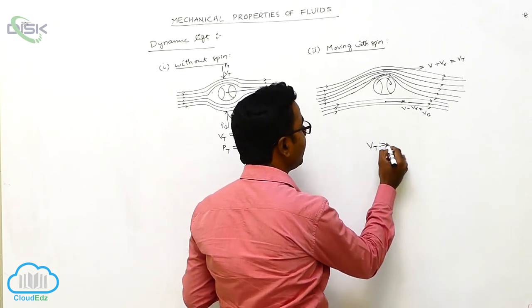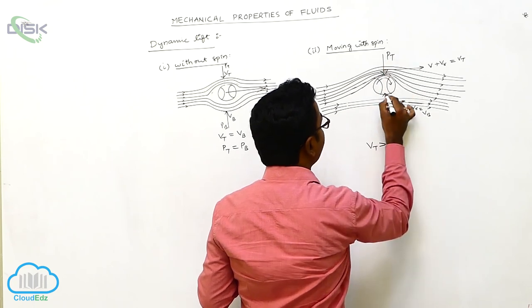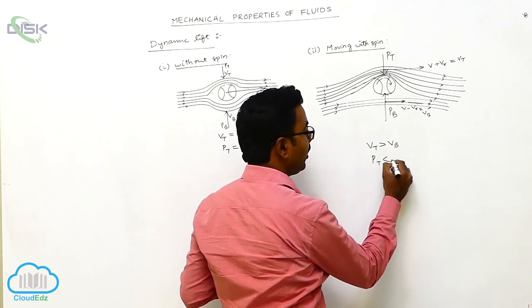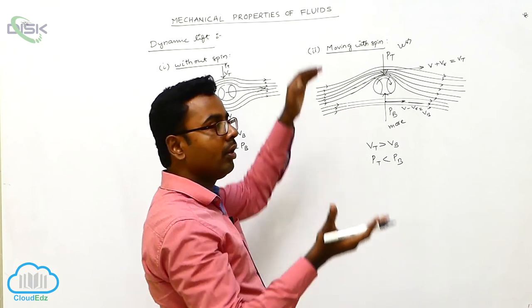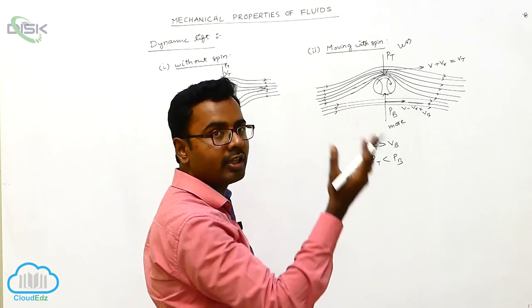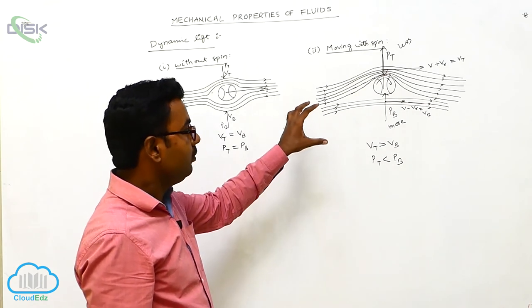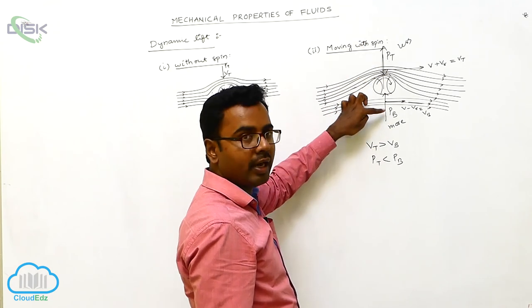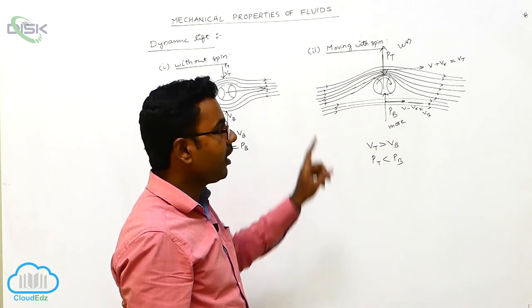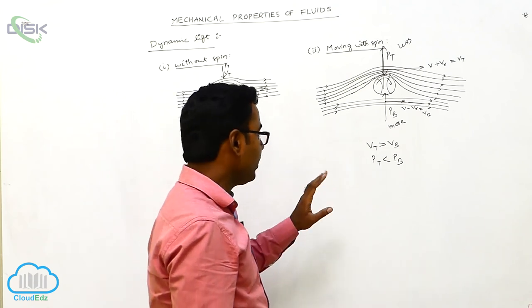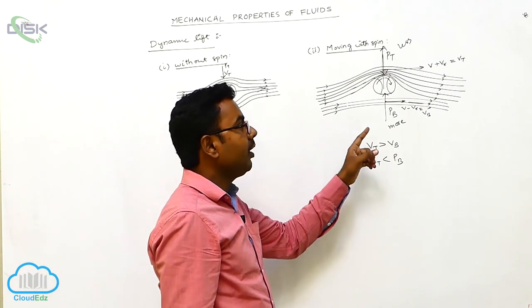From this we observe that vt is greater than vb — there is more velocity above the ball and less velocity below. Since vt is greater than vb, Pt is less than Pb: less pressure acts on the top and more pressure acts on the bottom. Due to this pressure difference, the ball experiences an upward force. This upward force is called dynamic lift — it acts on the ball due to the pressure difference at the top and bottom when the ball is spinning and moving in air.